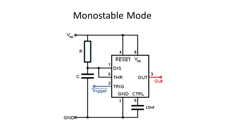So whenever you give an input at pin number two, you get an output pulse whose time period is decided by the values of R and C. So again, by changing the values of R and C, you can get a wide range of pulse widths.